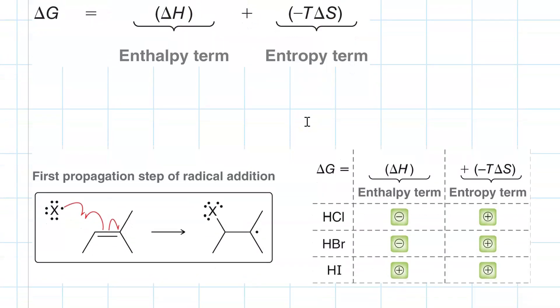When we look at the first propagation step, radical addition, well no matter what your halogen is, this is going to have a negative entropy term. Delta S is going to be negative, meaning negative T delta S is positive. So entropy disfavors the first step. But this bond forming between carbon and a halogen is strong enough that you get a negative enthalpy term for chlorine and a negative enthalpy term for bromine. With HI, because iodine has a bigger atomic radius, the C-I bond is so weak that we get a positive enthalpy term. That means the first step is never spontaneous with HI. It can be spontaneous with HCl and HBr.